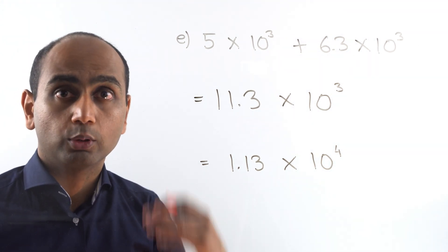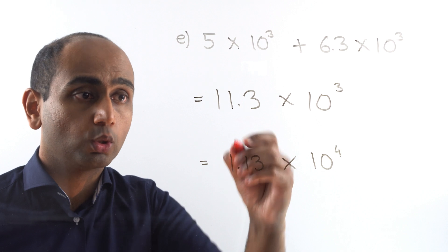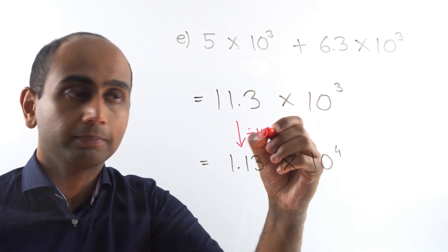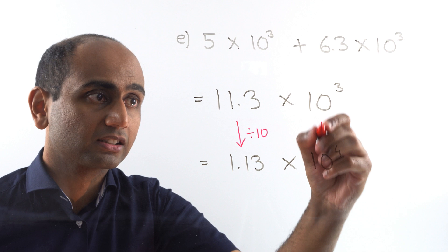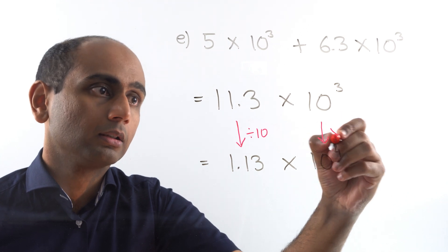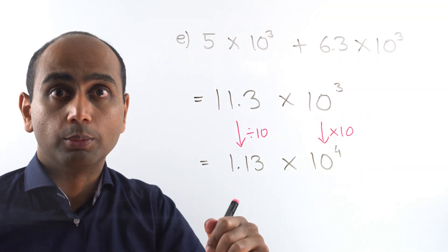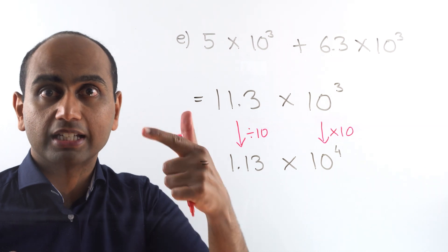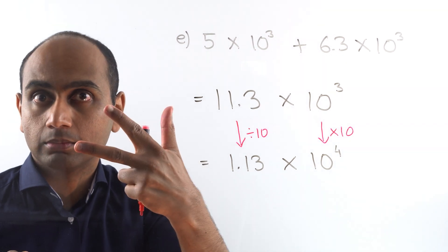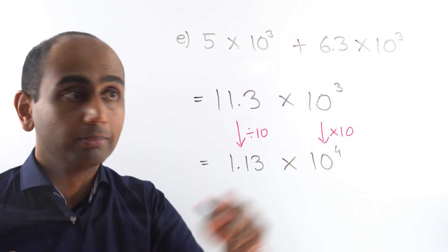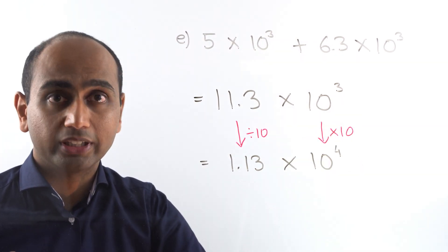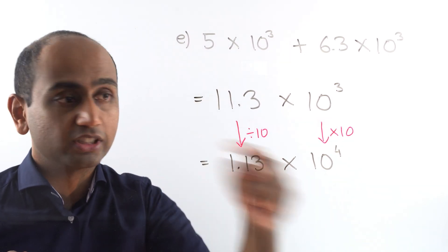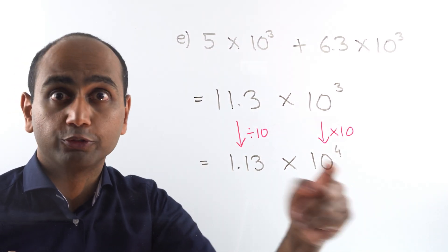Just to recap: what we did there was divide the coefficient by 10 and multiply the power by 10. Remember 10 cubed is just 10 times 10 times 10. If we multiply that by 10 again we end up with 10 times 10 times 10 times 10, which is 10 to the power of 4.